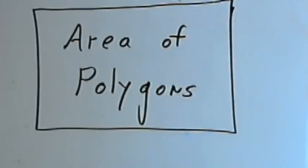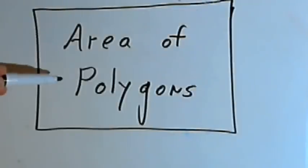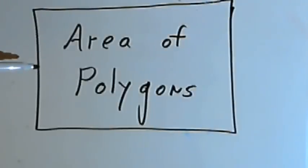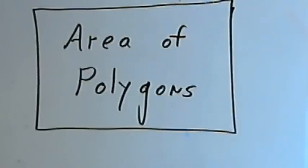This video is provided as supplementary material for courses taught at Howard Community College. In this video I'm going to talk about the area of polygons. I'll explain how to find the areas of squares, rectangles, parallelograms, triangles, kites, and trapezoids.